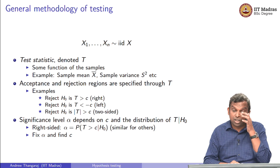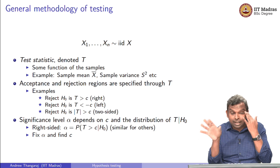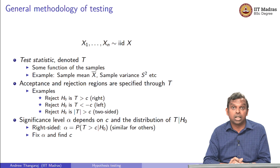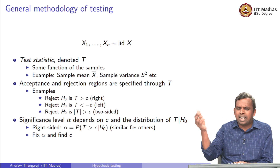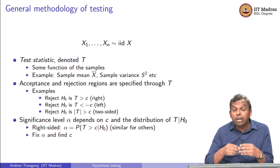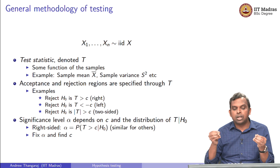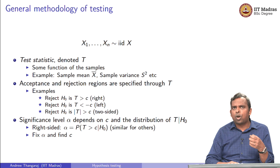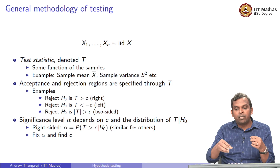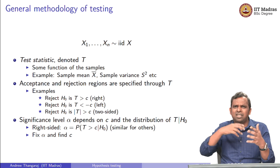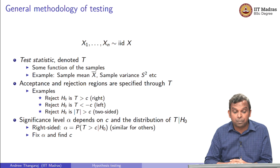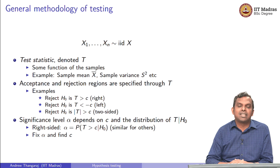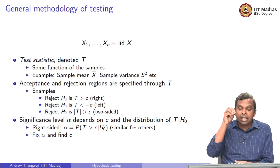Here is the general methodology of testing. All these standard tests fall into this kind of a framework, so it is good to know the framework. You have n samples, iid from some distribution. The first thing that most of these tests will compute is something called a test statistic. We always thought of acceptance regions and rejection regions, but when n samples are from some continuous distribution, it is sort of difficult to specify the acceptance and rejection regions directly. So one of the very standard things done is you first compute a test statistic.